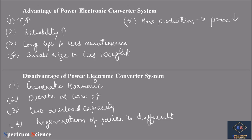Power electronic converters have a long life and require less maintenance because of fewer moving parts. They have small size and low weight, requiring less installation area and lower installation cost. Due to mass production of power electronic semiconductor switches, their prices have also come down significantly.